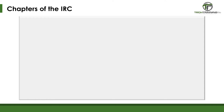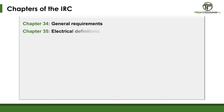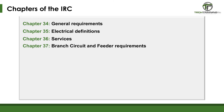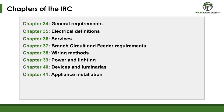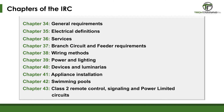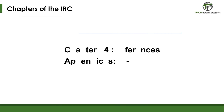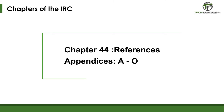Part 8 is Electrical, covering Chapters 34 through 43: Chapter 34, General Requirements; Chapter 35, Electrical Definitions; Chapter 36, Services; Chapter 37, Branch, Circuit, and Feeder Requirements; Chapter 38, Wiring Methods; Chapter 39, Power and Lighting; Chapter 40, Devices and Luminaires; Chapter 41, Appliance Installation; Chapter 42, Swimming Pools; and Chapter 43, Class II Remote Control, Signaling and Power Limited Circuits. Finally, Part 9 is References, consisting of Chapter 44, Reference Standards, as well as all of the appendices, A through O.